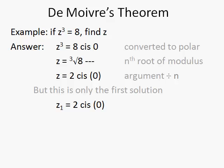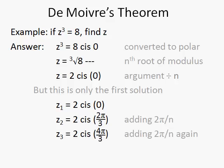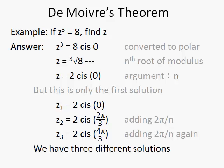Our next solution is 2π over n apart, so we add 2π over 3, and our third solution is a further 2π over 3 on from that, giving us three different solutions. If we take z₂ and raise it to the third power, we will get 8.